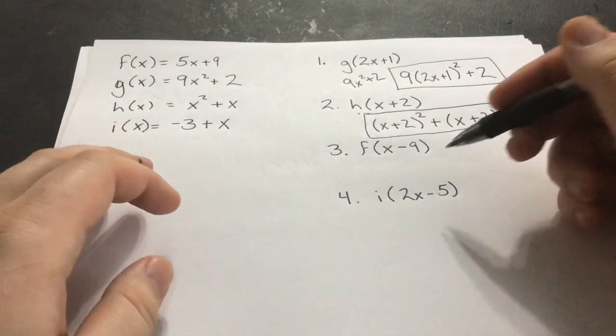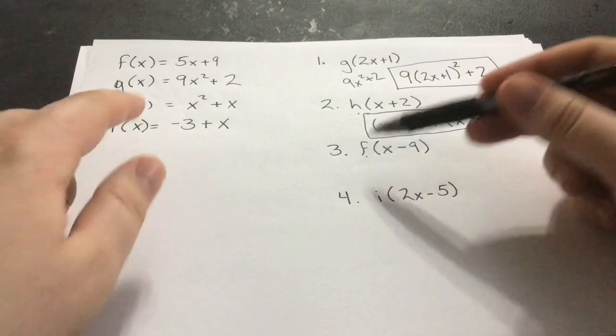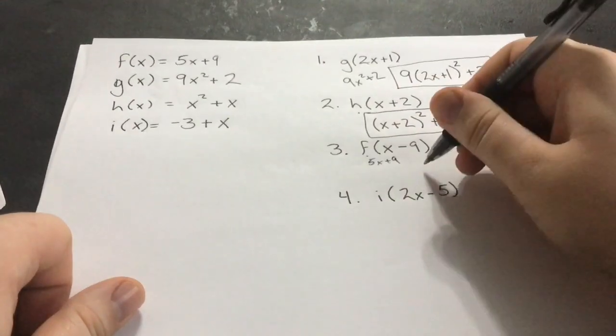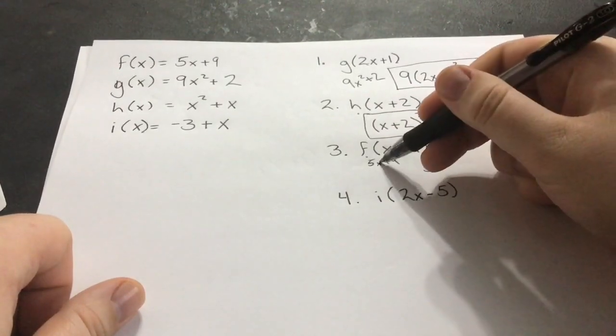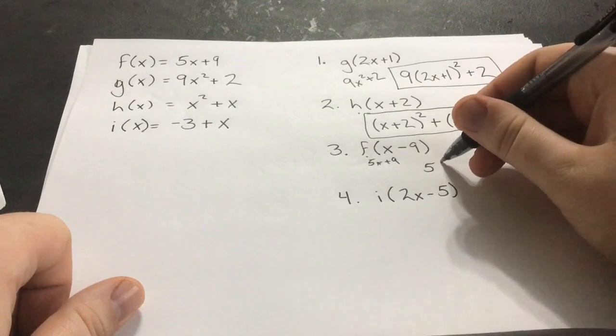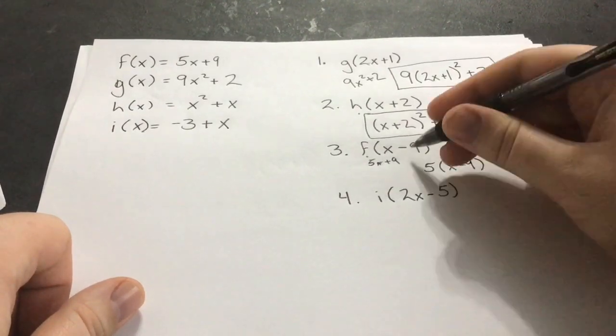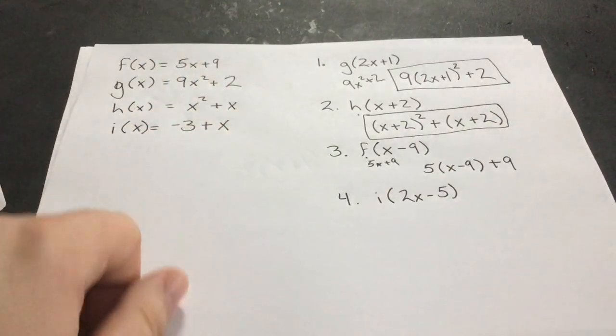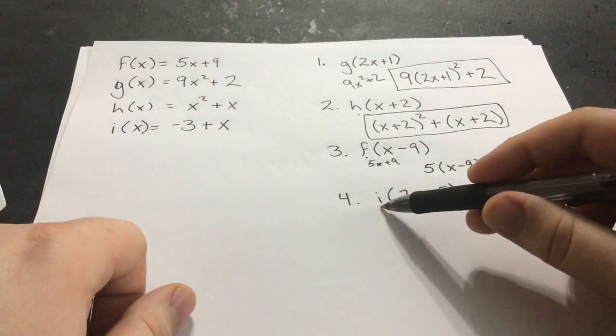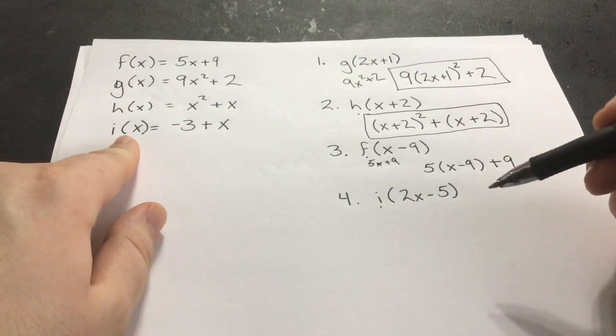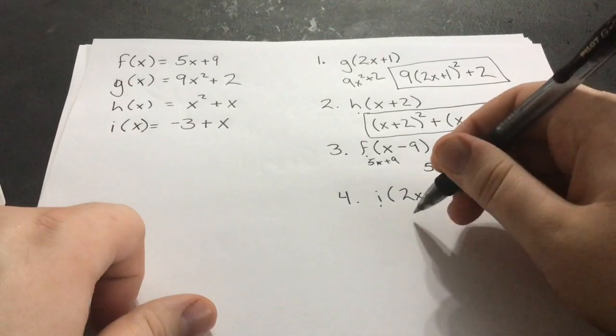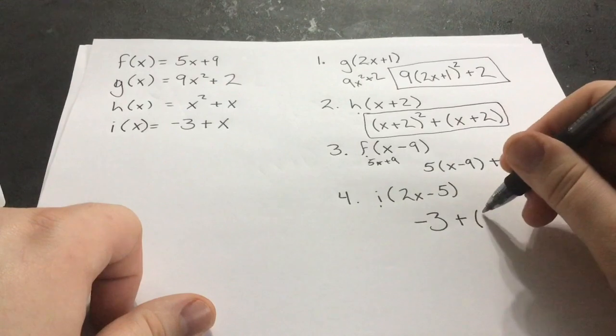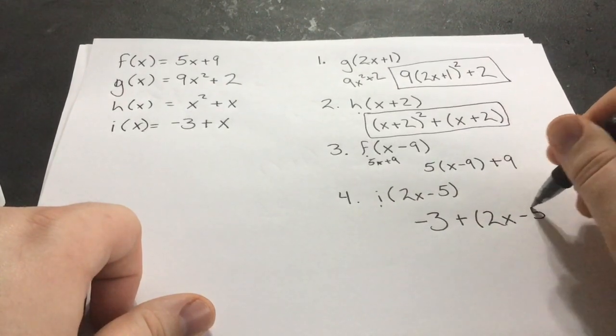I'm going to work through these next two at a little bit quicker pace. f is 5x plus 9. So instead of 5x plus 9, I am going to erase that x, and in its place, x minus 9, right there, and then plus 9 because that is how this ends. Finally, i, I look over here and I see equation i is negative 3 plus x. So negative 3 plus, and instead of writing x, what is in these parentheses? 2x minus 5.